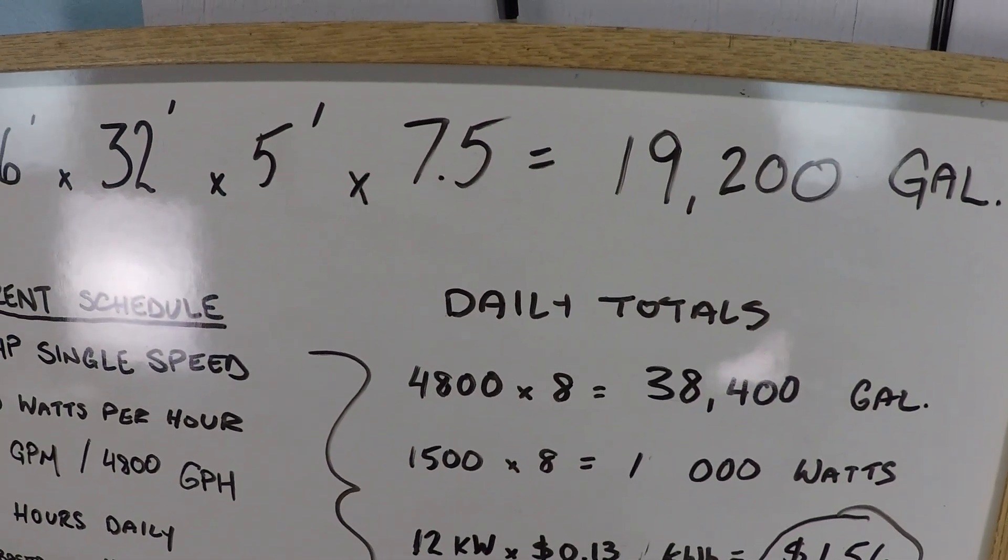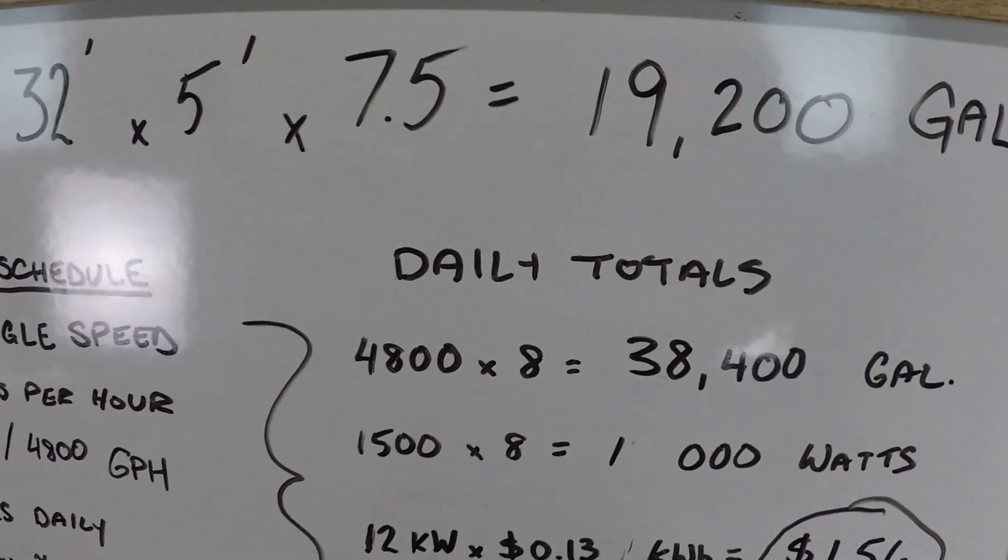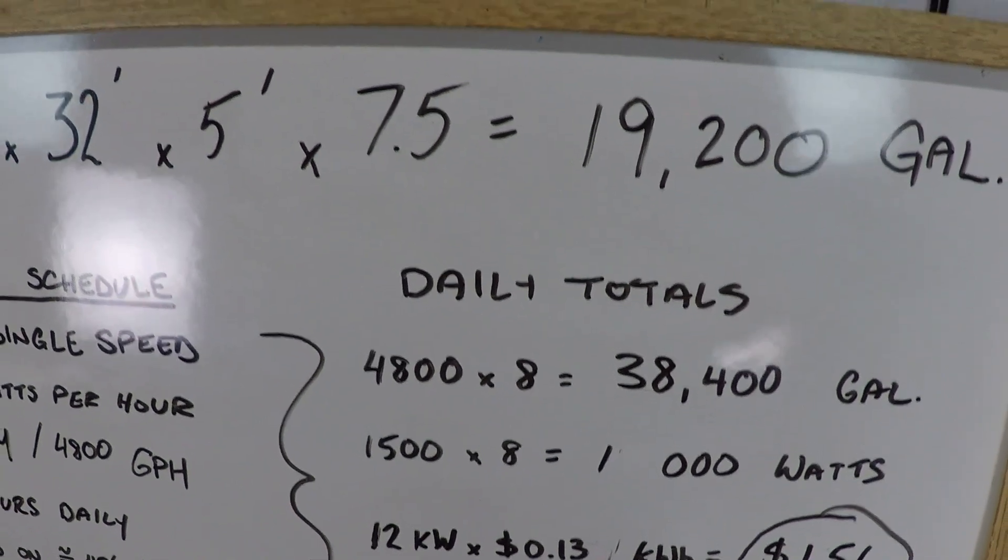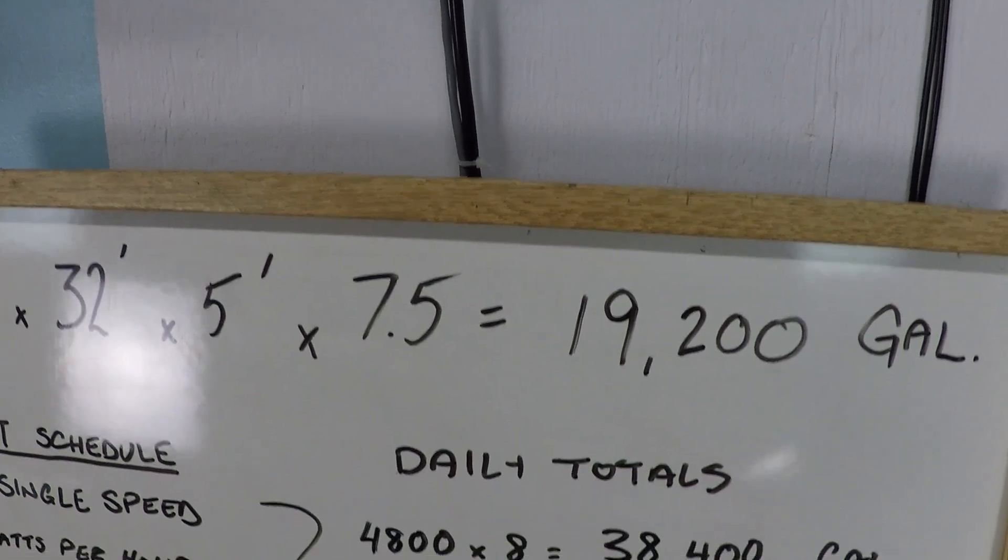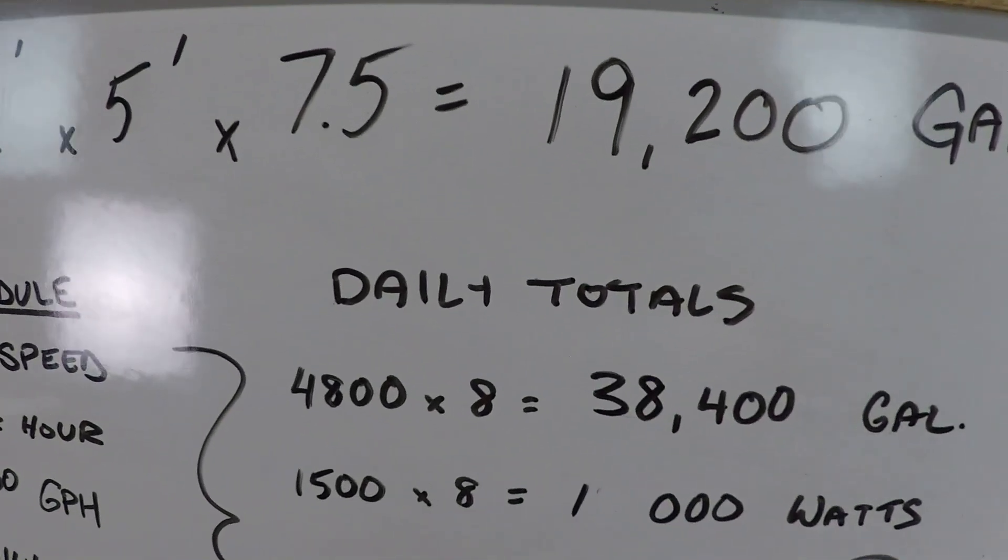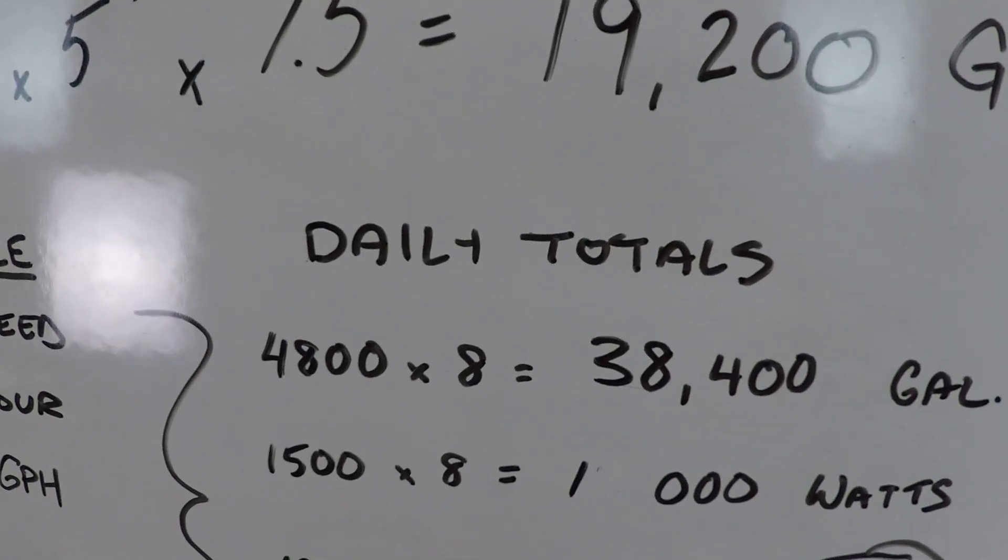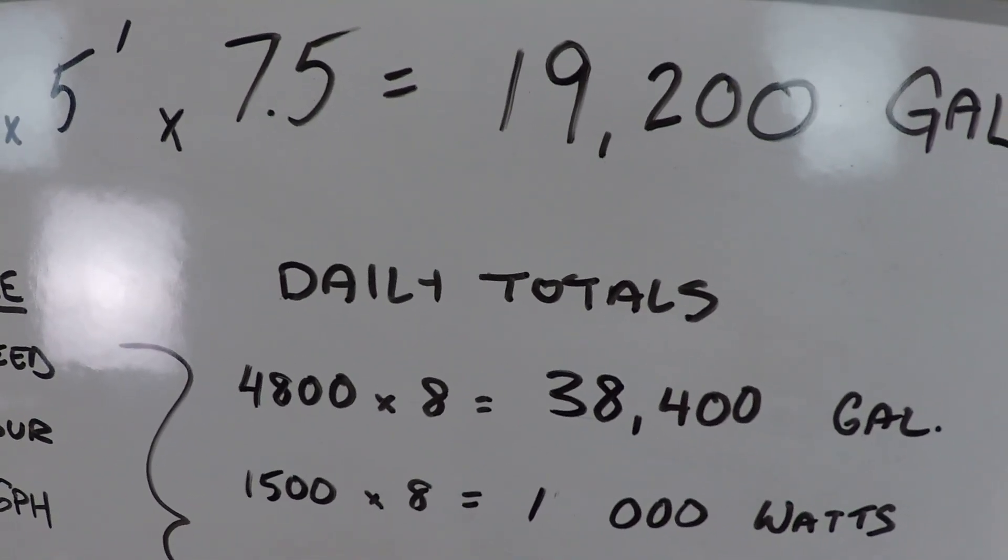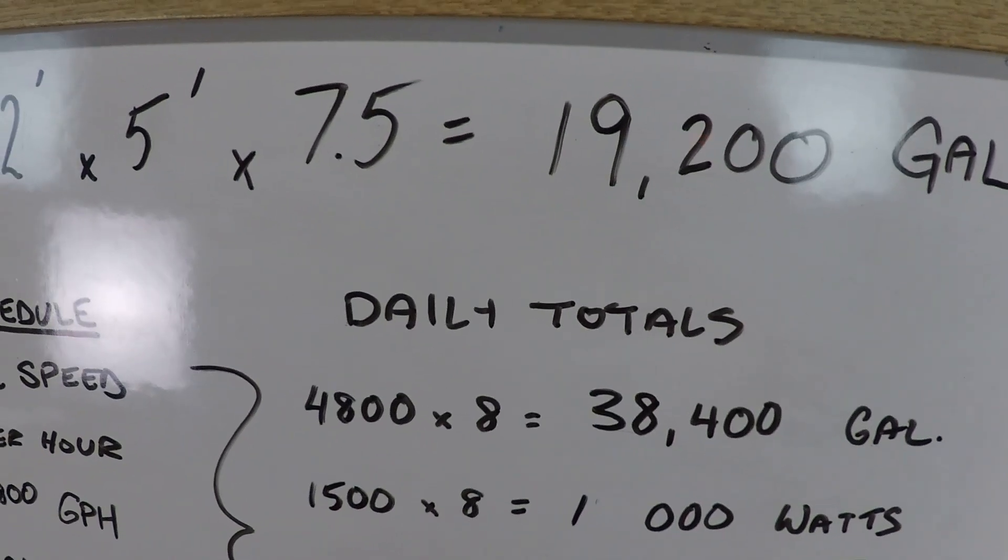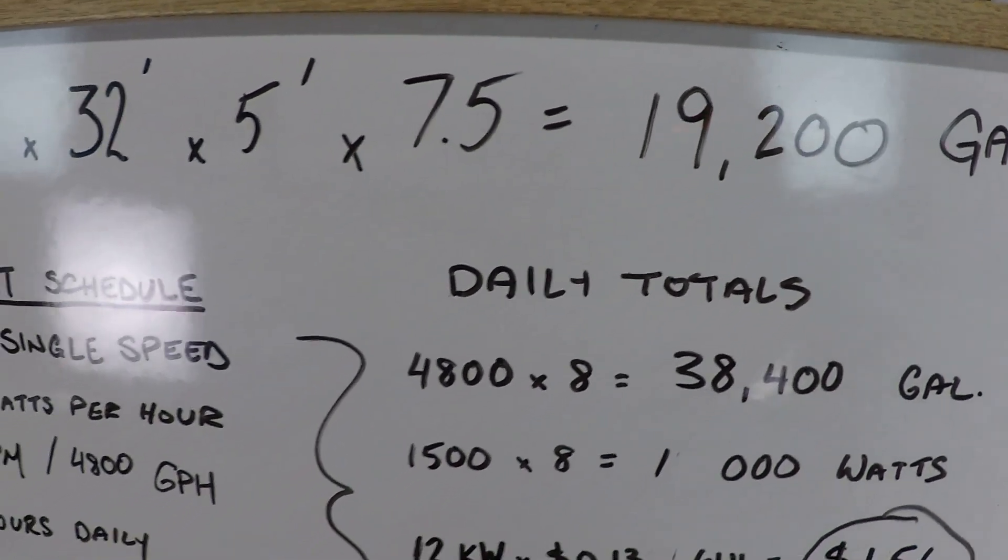What I had said in that video is that is not optimal. What you want to do is aim for three times the volume of the swimming pool filtered every day as your minimum value. In that video, I compared the variable speed pump apples to apples to a 38,000 gallon filtration schedule.